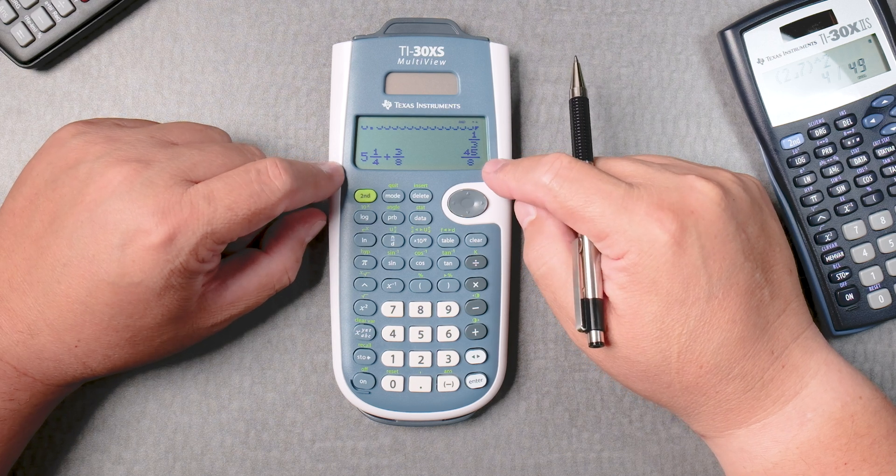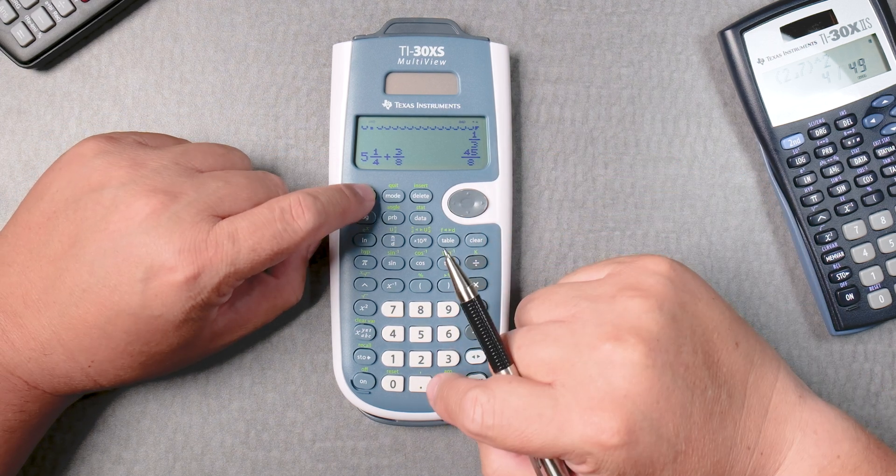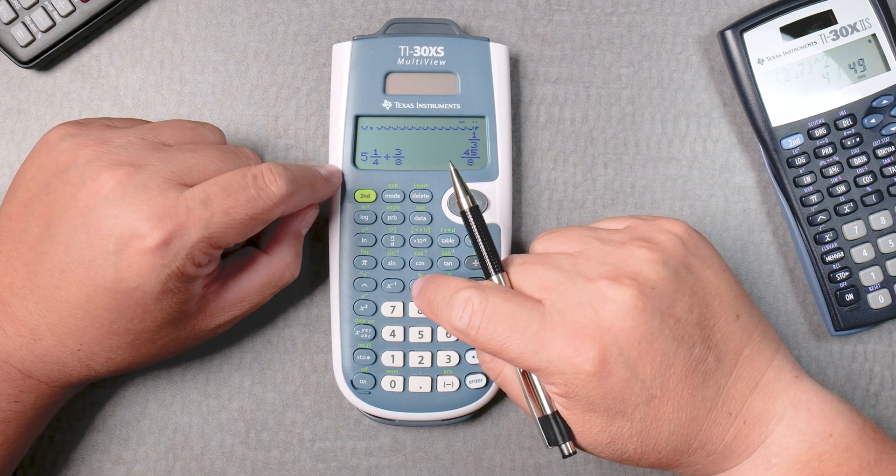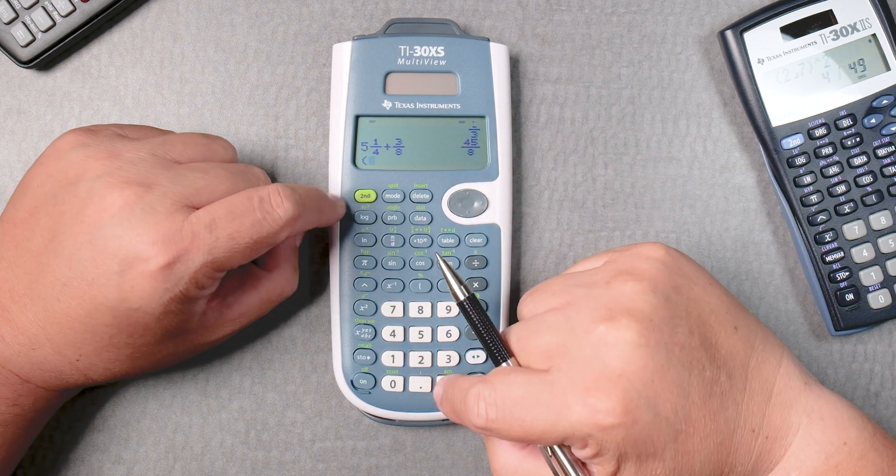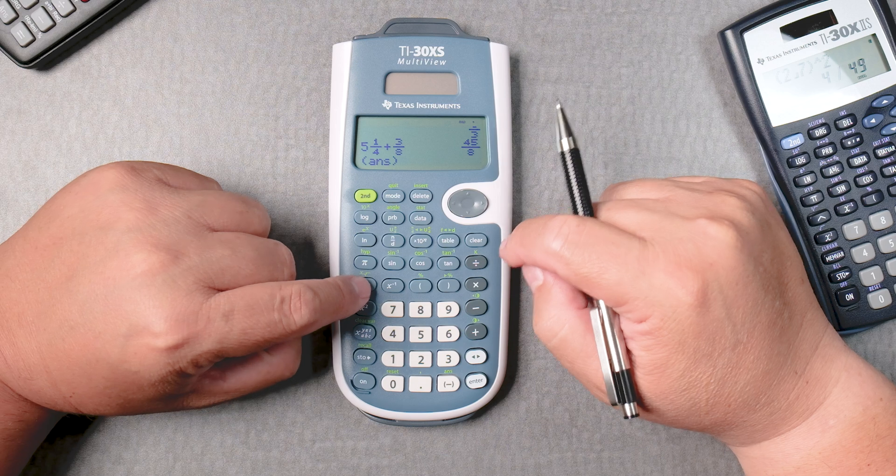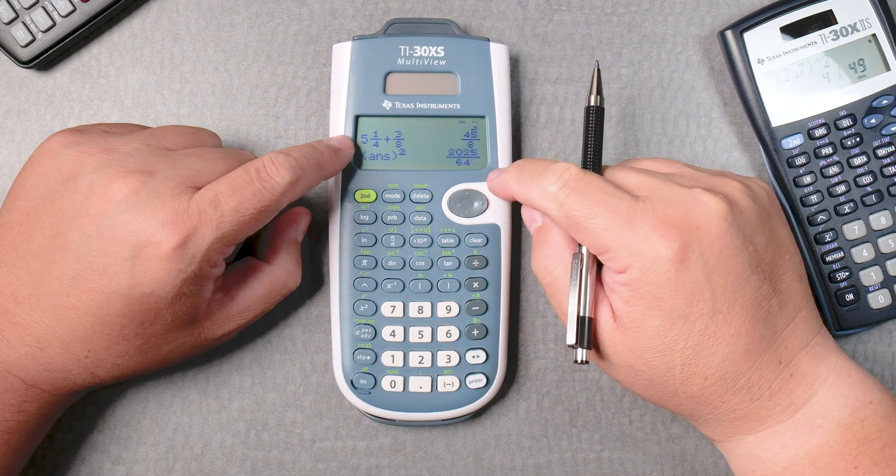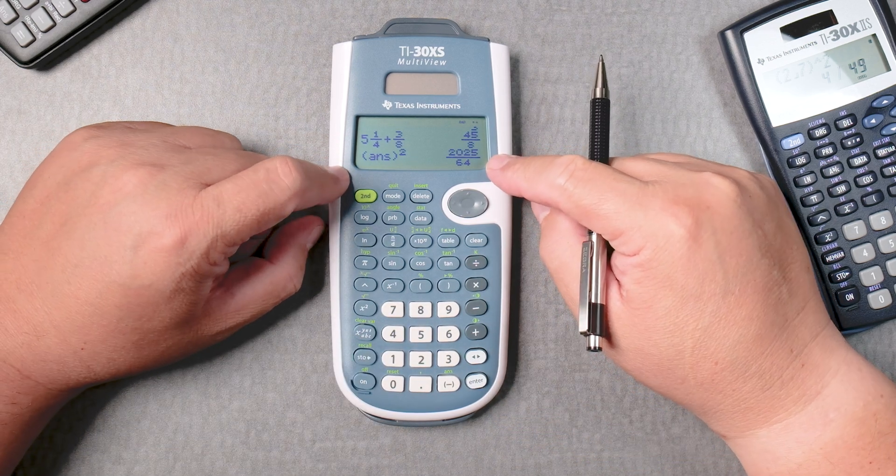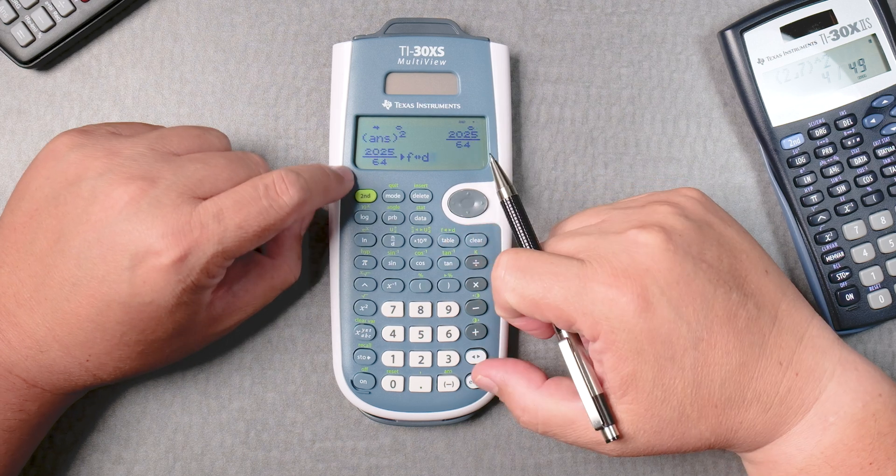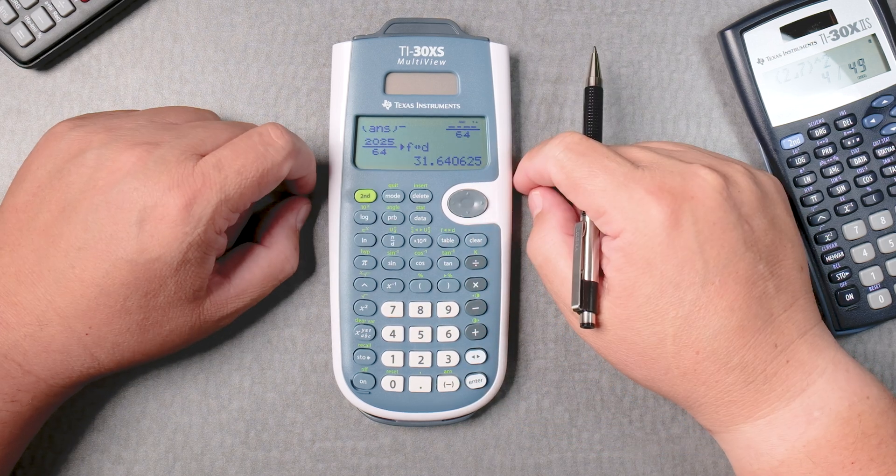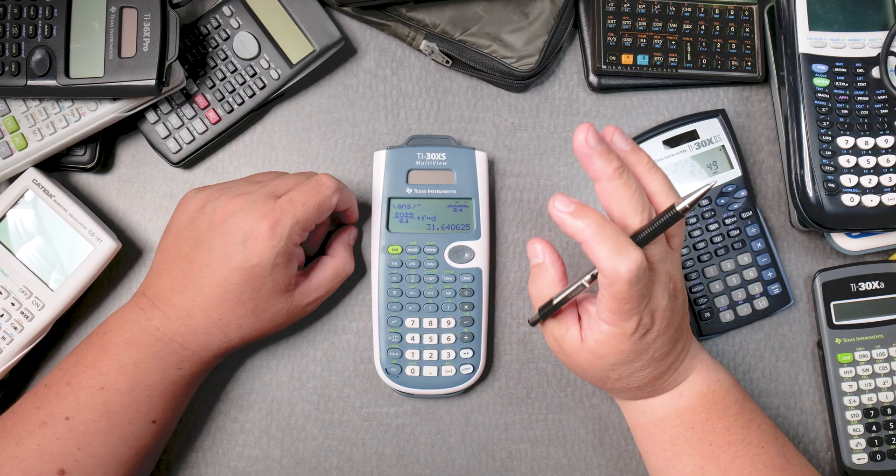Now, you can have numbers like this. Let's say you wanted to square this answer. You can do that. Press answer. You can square it. It gives you a bigger number, doesn't it? And you can go 2nd, table, to make it a decimal answer. So you can do a lot of operations with fractions.